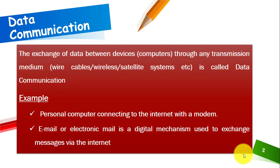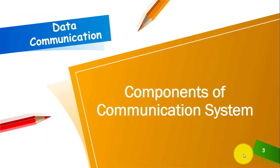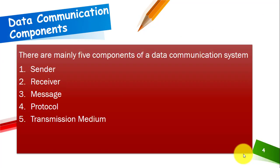If you have any other example in your mind, you can put it in the comment section as well. So what are the components of a communication system? There are five major components of a data communication system: sender, receiver, message, protocol, and transmission media.